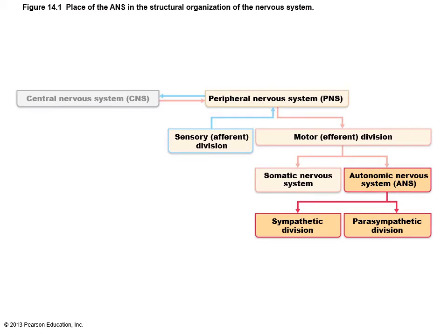Here's where we are with the nervous system. We started in chapter 11 with nervous tissue, then chapter 12 focused on the central nervous system, and chapter 13 was the peripheral nervous system — with the sensory afferent division bringing in information and the motor efferent division. The somatic nervous system connected to skeletal muscles. In this chapter, chapter 14, the autonomic nervous system has different effectors: cardiac muscle, smooth muscle, and glands. There are two divisions: the sympathetic division and the parasympathetic division.